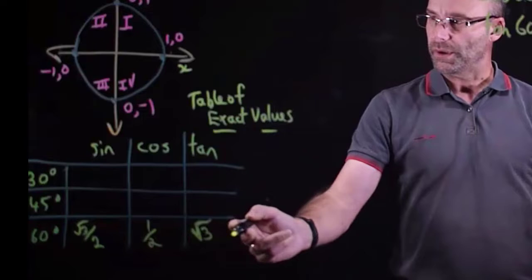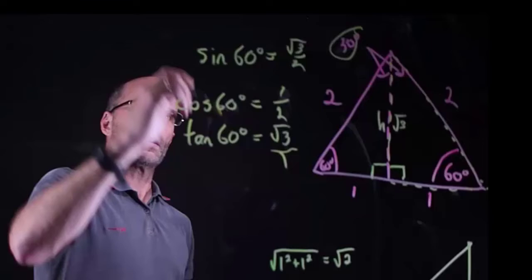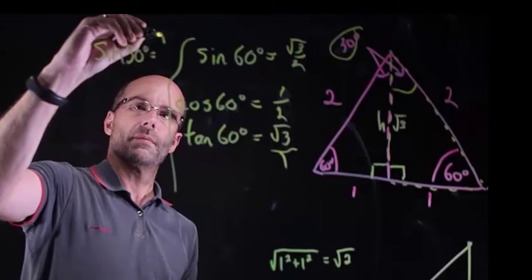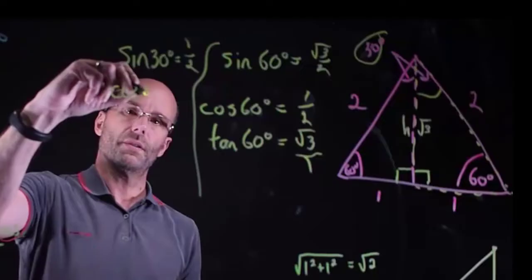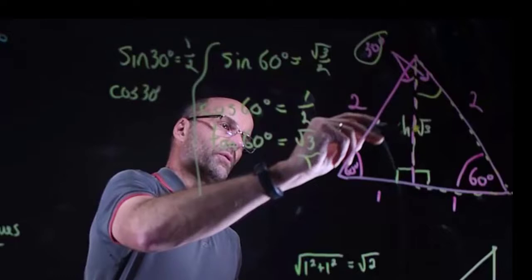The angle at the top is 30°, so we can complete the pattern. Sine 30° is opposite over hypotenuse, which is 1/2. Cosine 30° is adjacent over hypotenuse, which is √3 / 2.